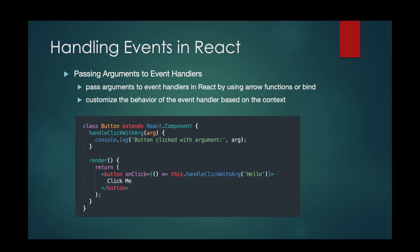If you look at this example, we have the class button, we have the render function, and handleClickWithArgument with the argument passed to it. An arrow function is used to pass the argument 'hello' to the handleClickWithArgument method when the button is clicked. Inside the button's onClick, you have the anonymous arrow function passing the argument.